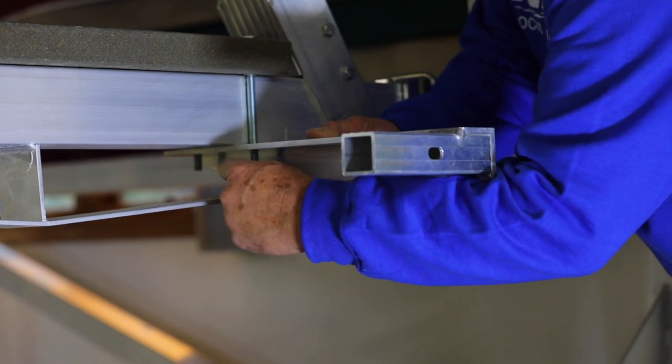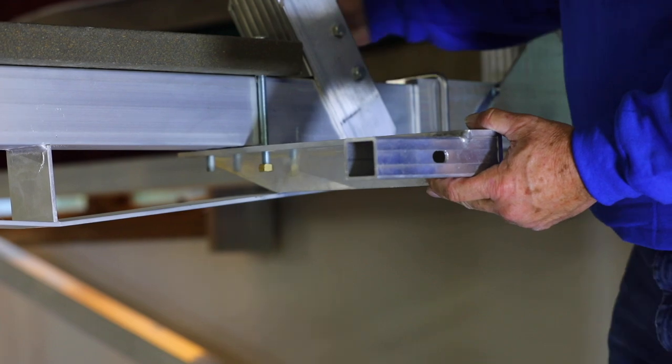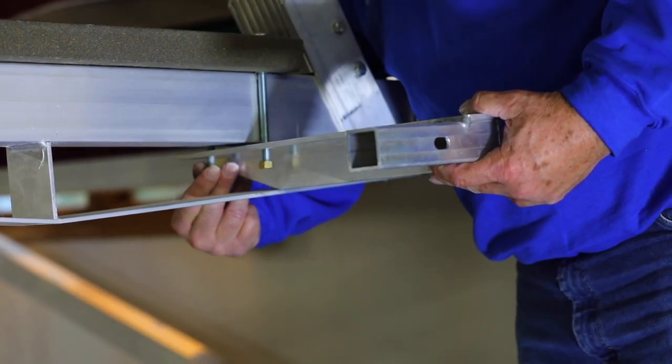Attach the stop bracket to the cross beam with the existing carriage bolt and brass nuts. Repeat this process on the other side. Do not tighten down the bolts till the bumper has been added.